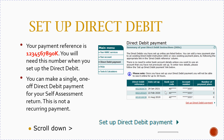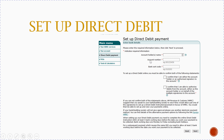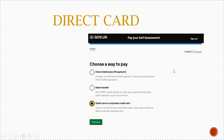You will see the direct debit payment screen and you'd click 'set up direct debit payment'. On the next page you fill in your name and your bank details, tick that it's your bank account and that you are authorised to make the direct debit, then set up the direct debit instructions and click next.